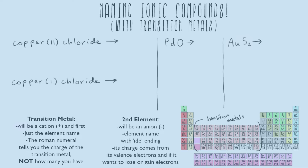We'll go both from name to chemical formula and chemical formula back to name. First, let's go over our rules. The transition metal will always be a cation, so it'll always be positive. You never have to wonder if your transition metal is going to be positive or negative — it's always positive. That means it will always come first, because in ionic compounds the non-metal is always going to be second and negatively charged. We name the transition metal with just the element name, and then the Roman numeral tells you the charge of the transition metal.